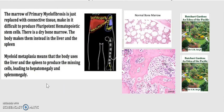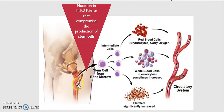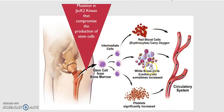This can lead to hepatomegaly and splenomegaly. In a normal bone marrow, the original stem cell diverts into intermediate stem cells which create red blood cells, white blood cells, and platelets. In primary myelofibrosis, there is a mutation in JAK2 kinase that compromises the production of stem cells.